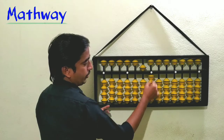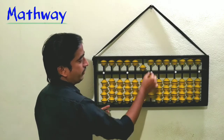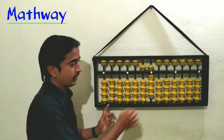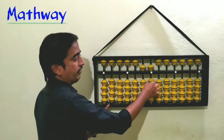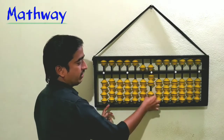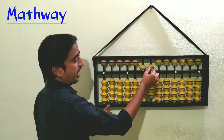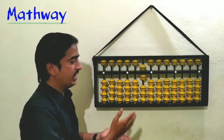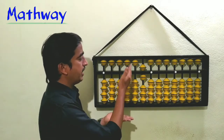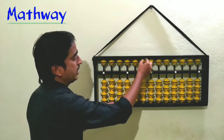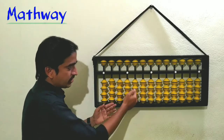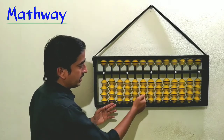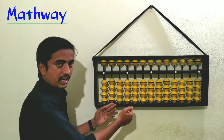Continuing from sixty: sixty-one through sixty-nine follow the same pattern. In this way we can represent any number. Moving to the hundreds rod — this is the ones rod, this is the tens rod, and this is the hundreds rod. So with one bead on the hundreds rod connected to the answer line, the number is one hundred.